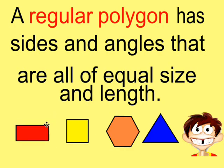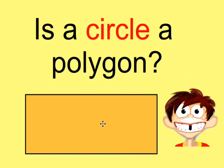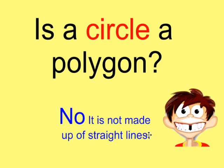This rectangle, however, is an irregular polygon because not all of its sides are the same length. Is a circle a polygon? Well, as we mentioned before, no, because it's not made up of straight lines.